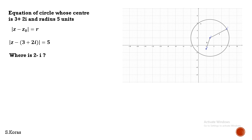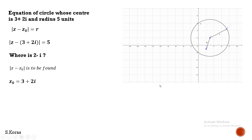We are not going to draw a circle while solving problems. So how do we prove this? It is very simple. We know the center and the given point, so we can find the distance between them easily. If the distance is less than the radius, the point is inside. If equal to the radius, the point is on the circle. If greater than the radius, the point is outside.